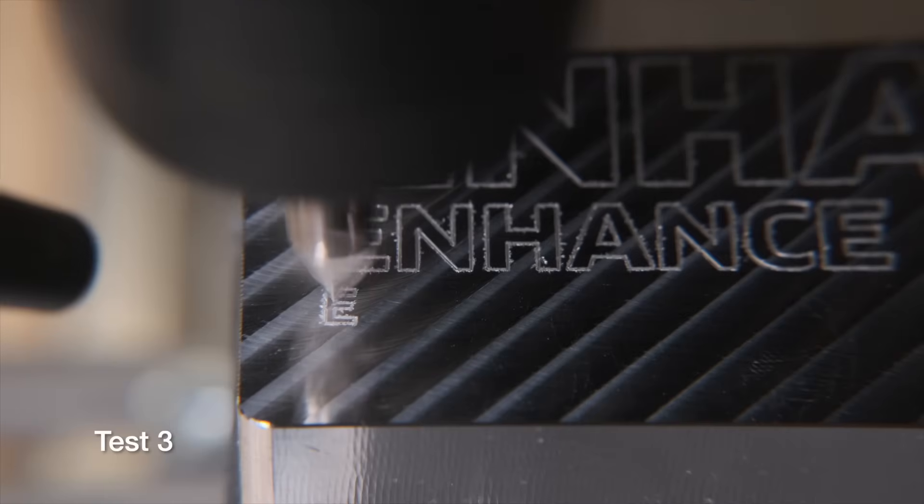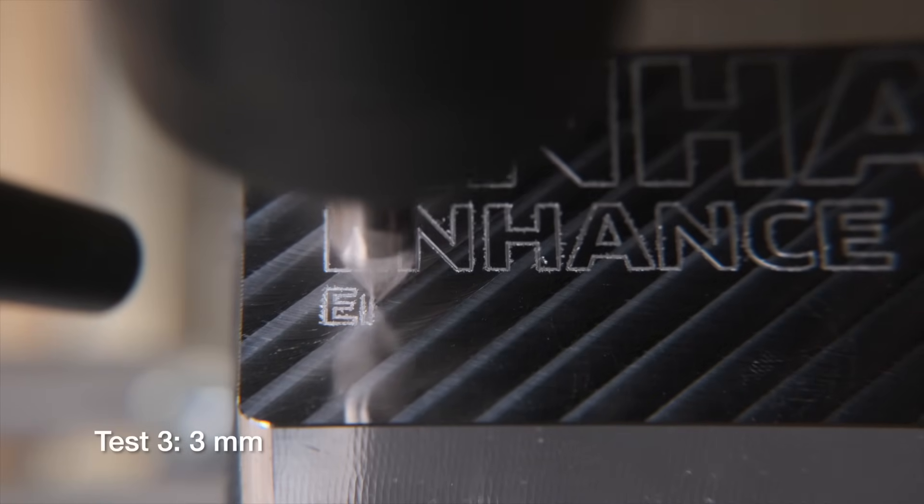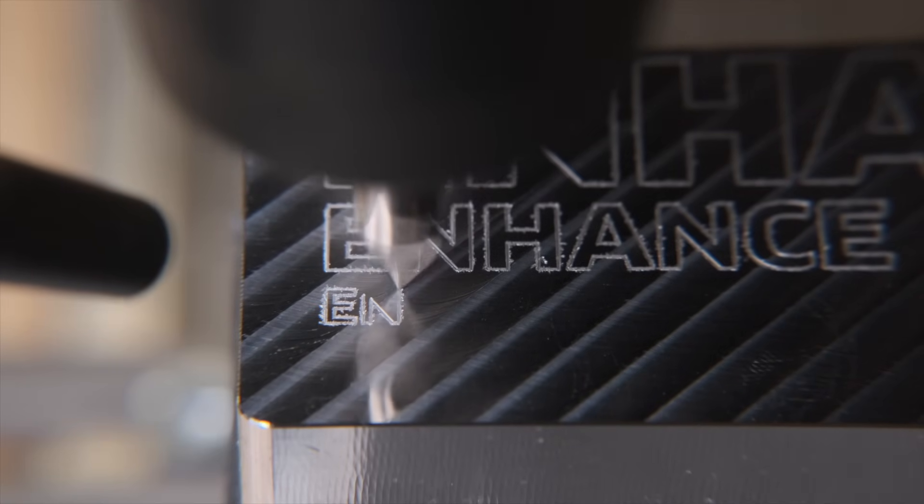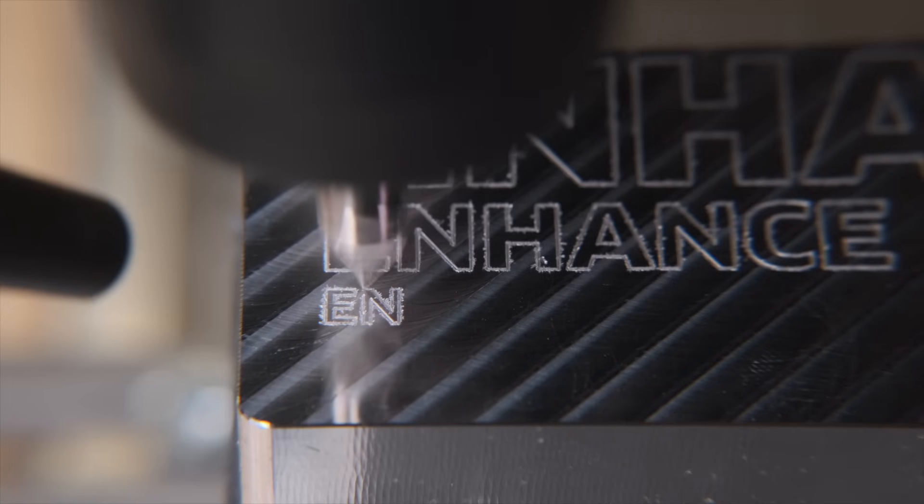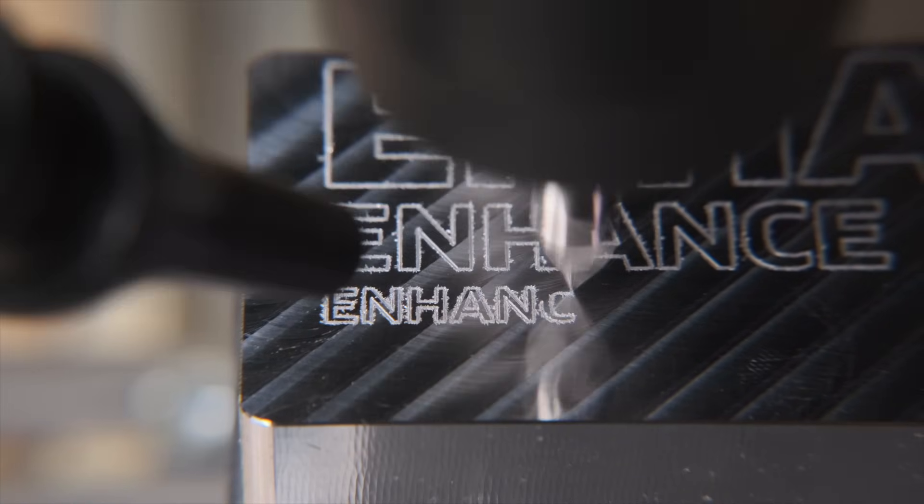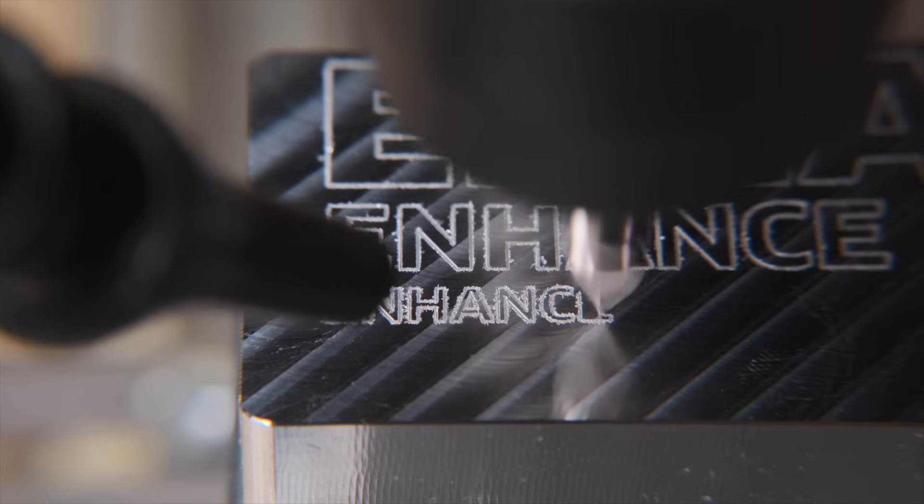Now we're down to three millimeters, roughly an eighth of an inch. This is usually about the degree of precision people are looking for when engraving things like plaques or larger coins. The desired details are still very obviously present. So let's focus over here on the left and go again.